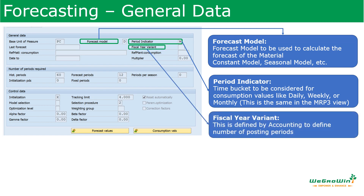The fiscal year variant is an accounting-defined field that describes the variant for the fiscal year — that is, the number of posting periods. The fiscal year variant has to be configured using transaction OB37, which is done by the finance team.